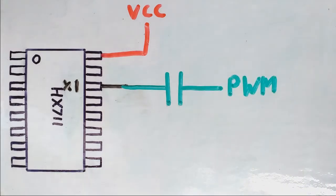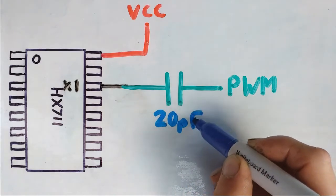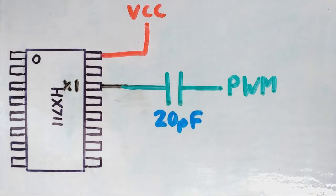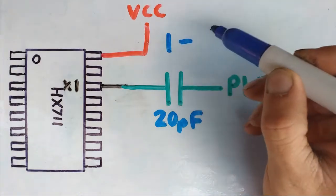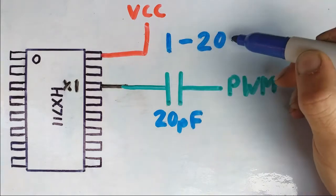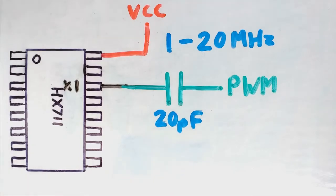Now the value of that capacitor needs to be 20 picofarads, and the minimum maximum frequency that this PWM can be is minimum of one, maximum of 20 megahertz.